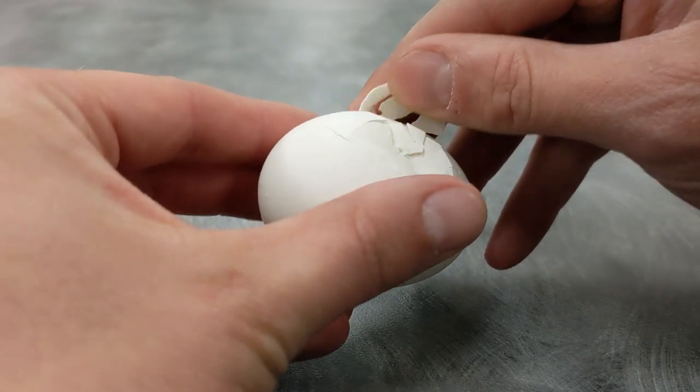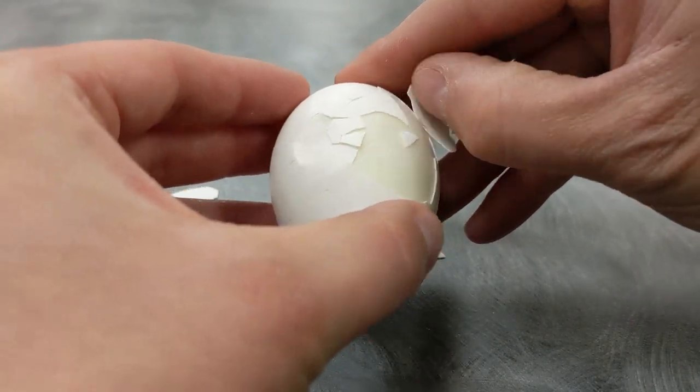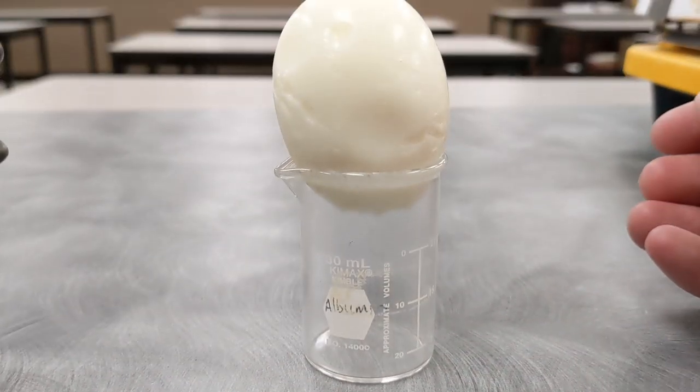Next step, peel it. You want to keep the egg intact as much as possible. As you can see, it doesn't have to be perfect.